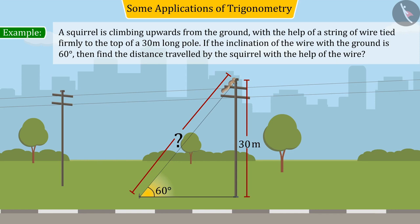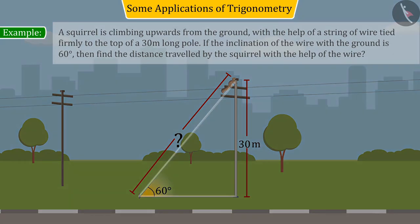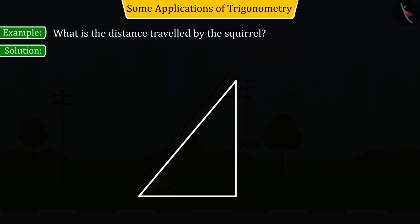Let us first construct the figure according to the given information. Suppose XO is a pole whose height is 30 meters, where a wire is tied to the top X of the pole which is connected with point Y on the ground, i.e., the place from which the squirrel climbs upwards.